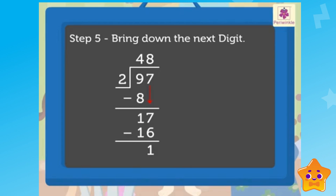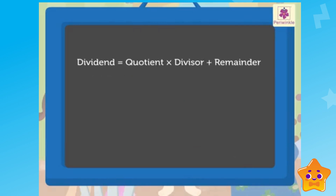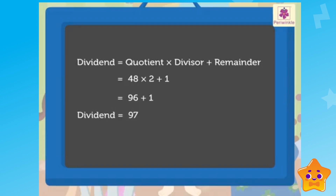There are no more digits to bring down — we have finished our division. The remainder here is one. Did you know, kids, we can also check our calculation? All we have to do is use the following relation: dividend equals quotient times divisor plus remainder. That is, 48 times two plus one, which is equal to 96 plus one, which equals 97. Isn't that interesting?